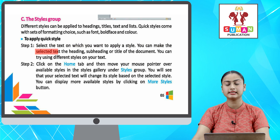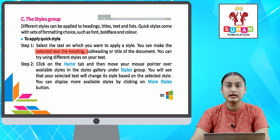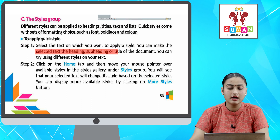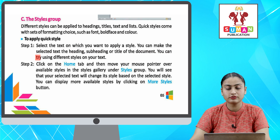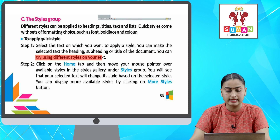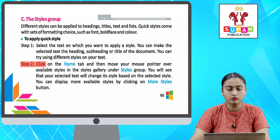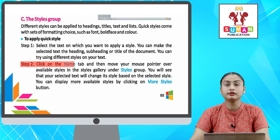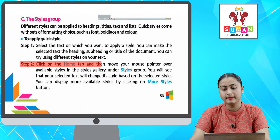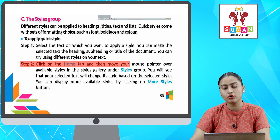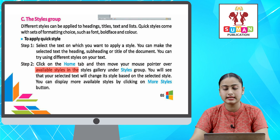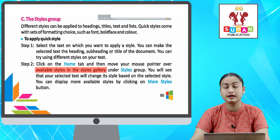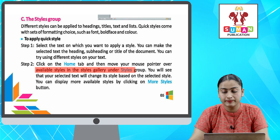You can make the selected text the heading, subheading, or title of the document. You can try using different styles on your text. Step two: click on the Home tab and then move your mouse pointer over available styles in the Styles gallery under the Styles group.